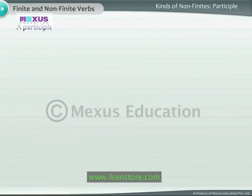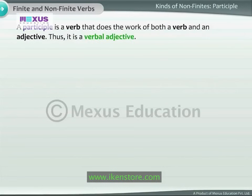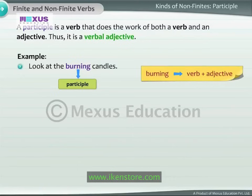A participle is a verb that does the work of both a verb and an adjective. Thus, it is a verbal adjective. For example, look at 'the burning candles.' The participle 'burning' acts as a verb and at the same time describes the noun 'candles.'